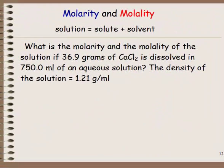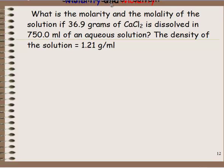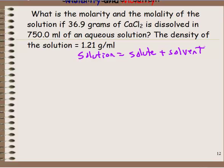Here's a more challenging version of the problem. What is the molarity and the molality? This time we're given not the grams of solute and grams of solvent, but the grams of solute and the milliliters of solution — a volume instead of a mass. The solute is 36.9 grams of CaCl₂, dissolved in 750 milliliters of an aqueous solution, meaning it's dissolved in water.